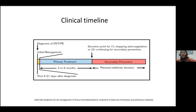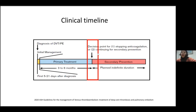I'd like to draw your attention to this diagram from the ASH 2020 guidelines, which clearly sums up the distinct clinical phases of VTE. We have the initial management phase — the first 5 to 21 days following diagnosis — whereby anticoagulation is initiated. Then the primary treatment phase, continuing anticoagulant therapy for 3 to 6 months, representing the minimal duration of treatment. Patients who go on to secondary prevention will most likely require indefinite anticoagulation. Mr. Tan has come to the important decision point: to continue or to stop anticoagulation.